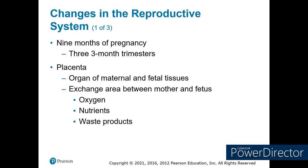The placenta is the organ that connects the fetus to the uterine wall. It facilitates gas exchange — oxygen, nutrients, and waste products — and is connected through the umbilical cord, allowing transfer of all necessary body fluids and nutrients from the mother to the fetus.